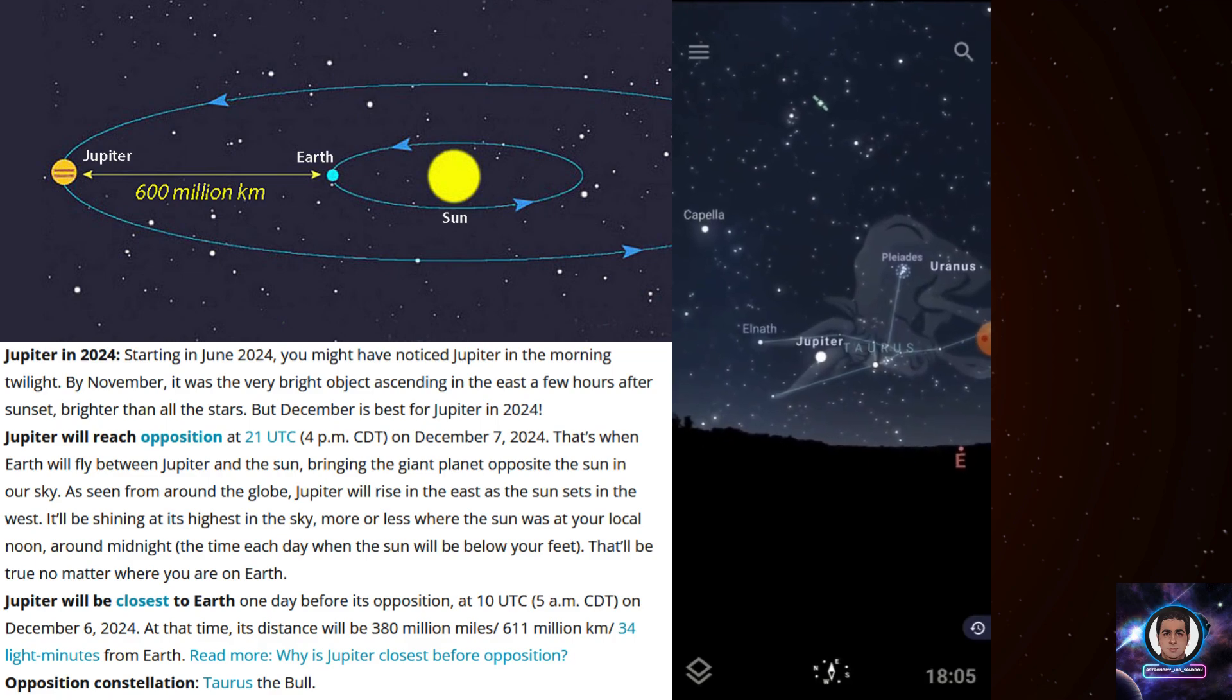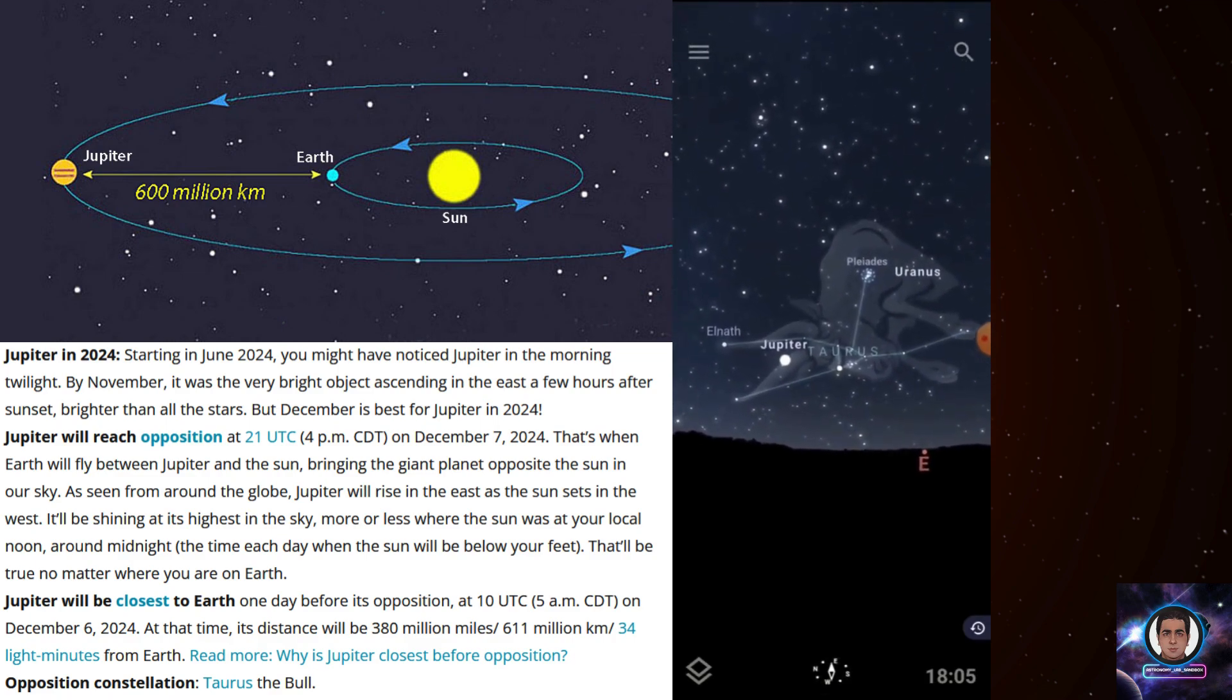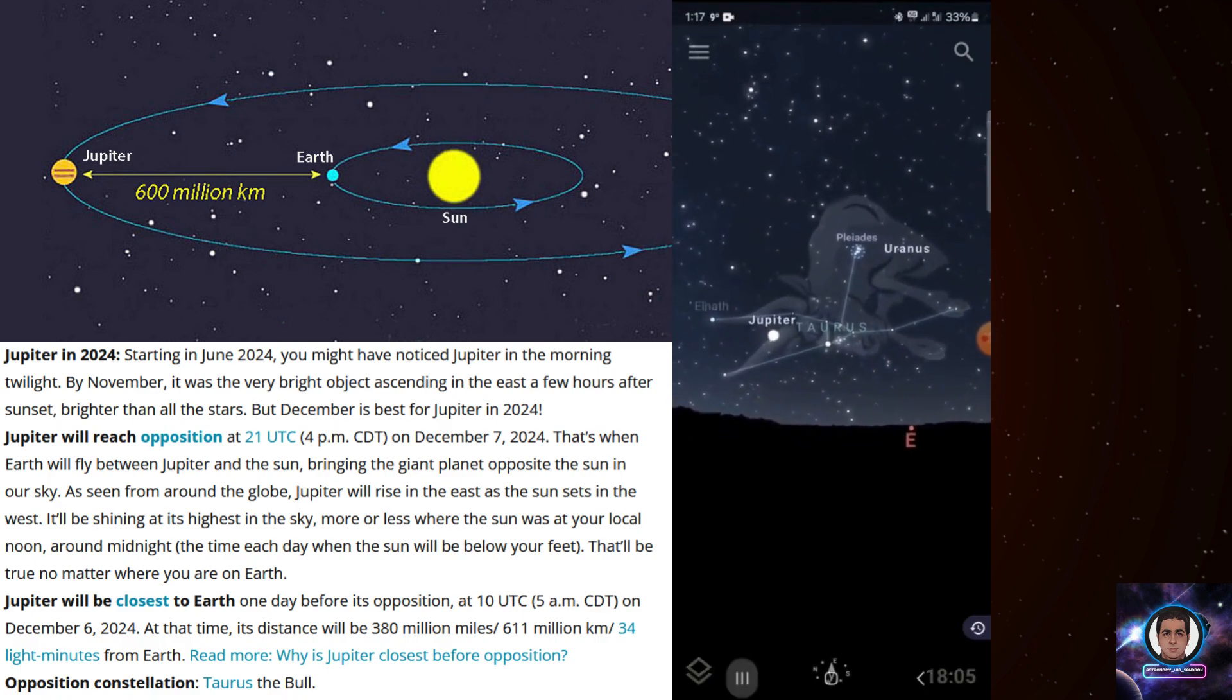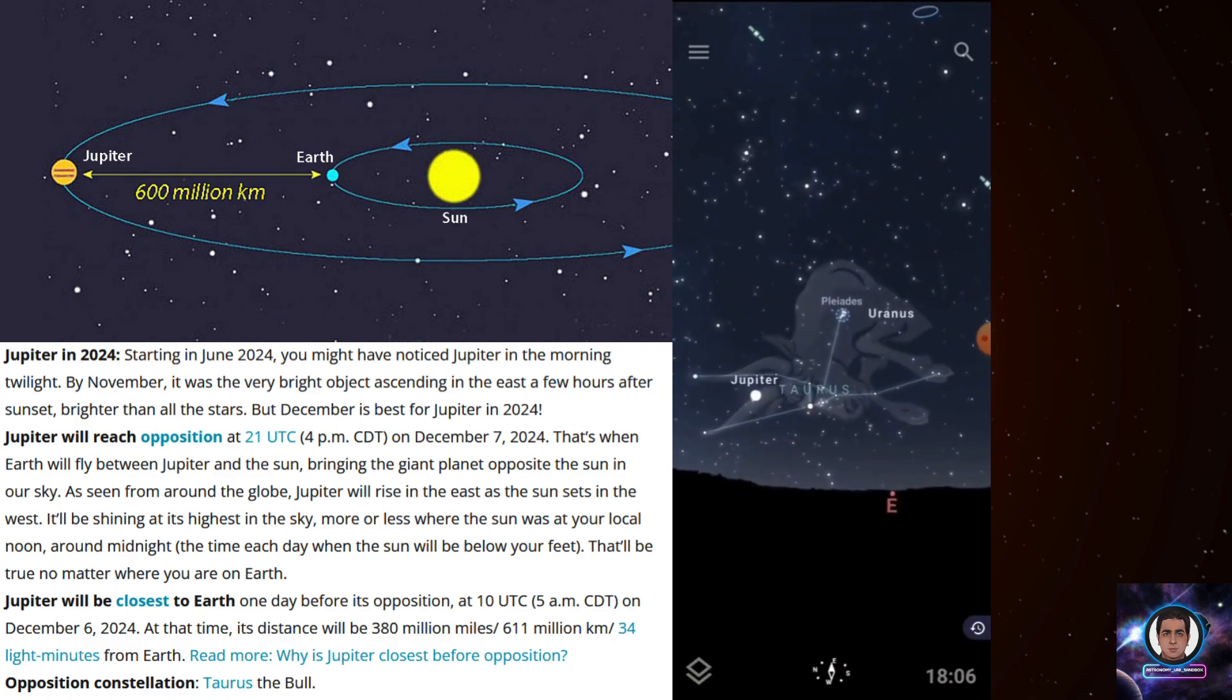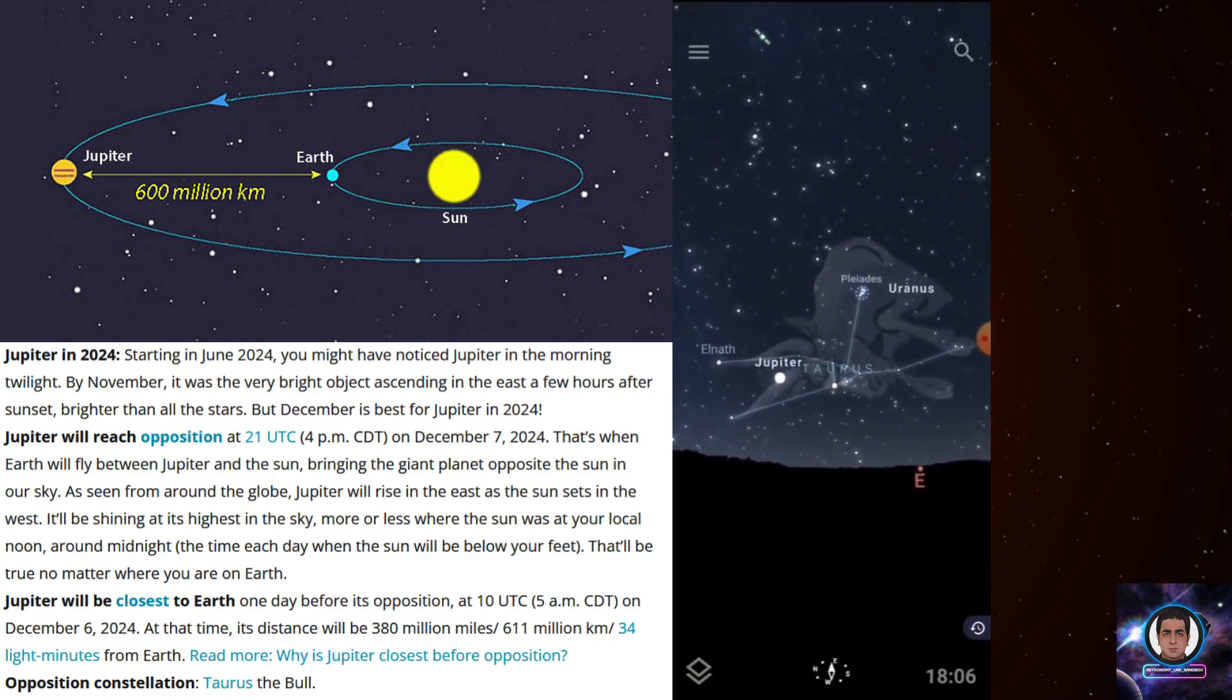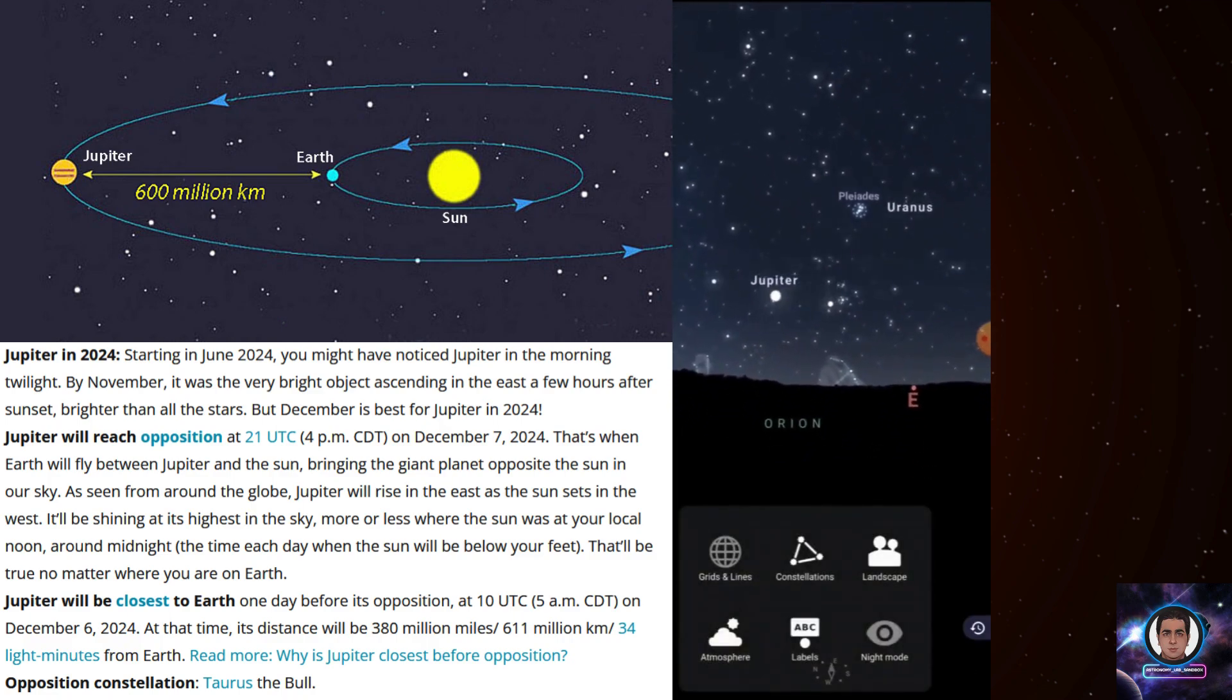But at night I will come and check again and record and create a video for you. So if you want to do it yourself, just install the Stellarium software and find out where is Jupiter, and from there you can guess and recognize where Jupiter actually is and you can find it out and enjoy seeing this beautiful scene.